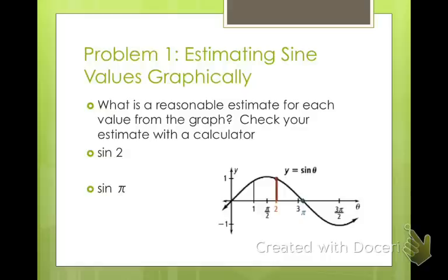So estimating sine values by graphing. What's a reasonable estimate for the value from the graph? Check your estimate with a calculator. So for the first one, if we take the sine of 2, you can see here that they've added 2 onto our graph. So if we know this is 1 right here, what would be an approximate value of this sine of 2? Well, it's going to be a little bit less than 1, very close. Go ahead and put that into your calculators and see what you get.